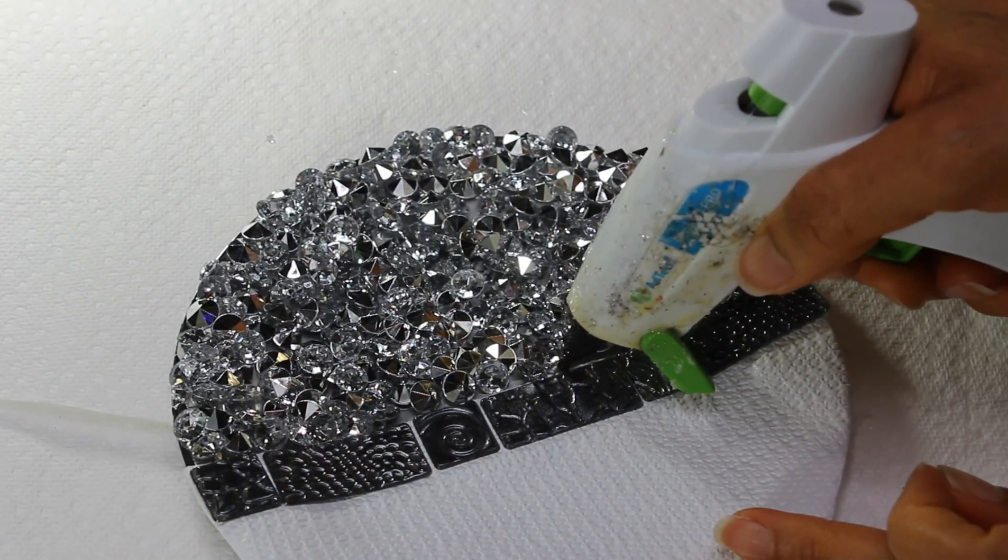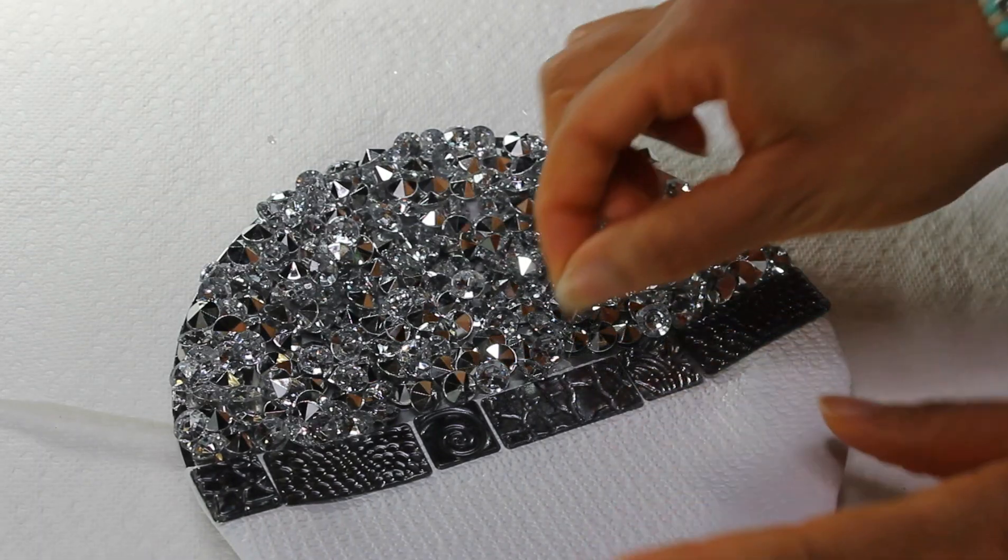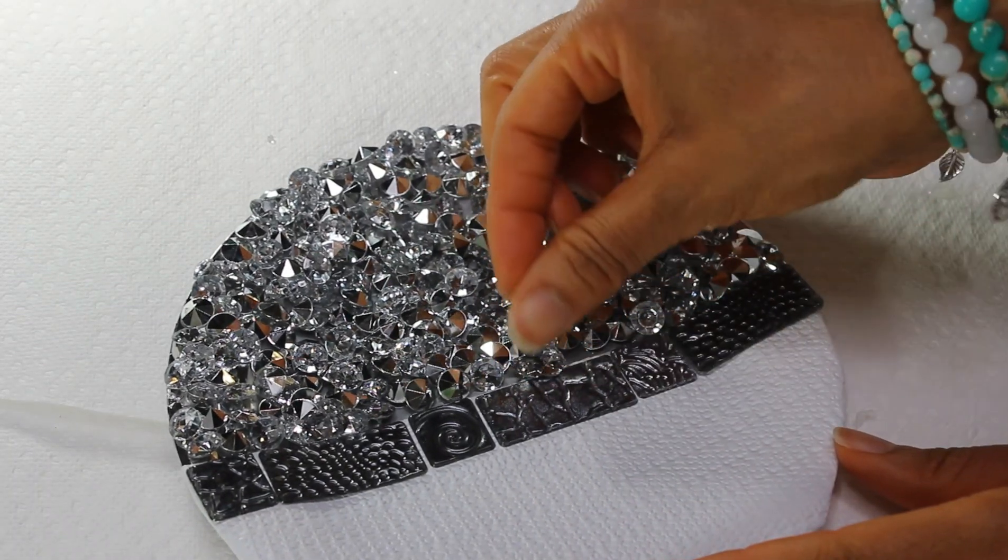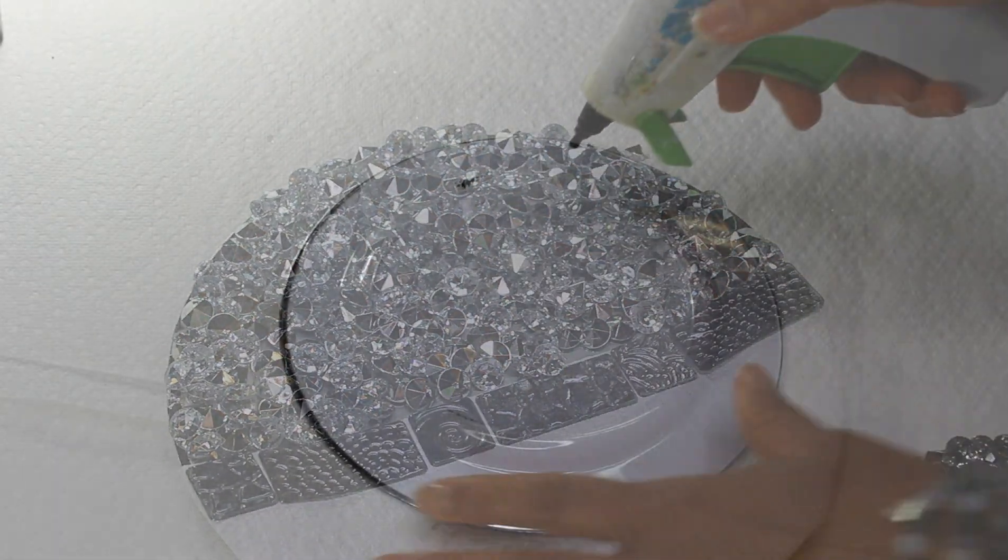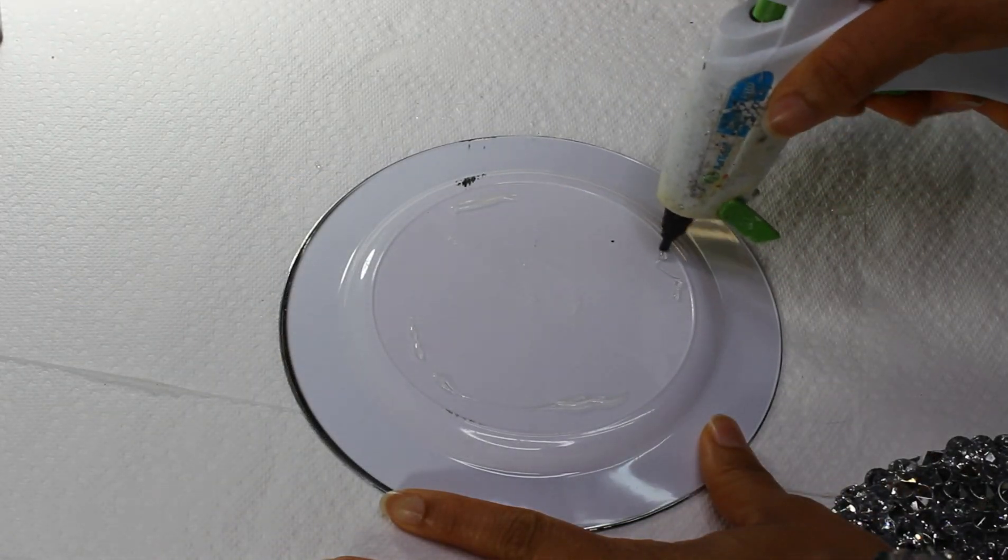For the second plate, I decided to use my hot glue gun to fill in any empty spaces that I might have left. Right here you see me hot gluing the two plates together.